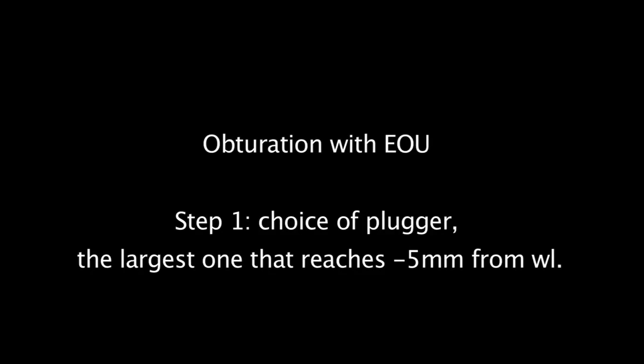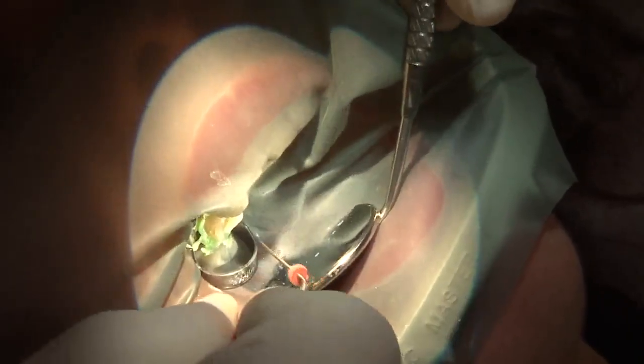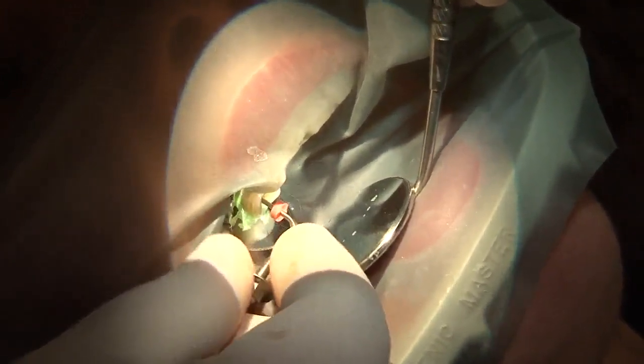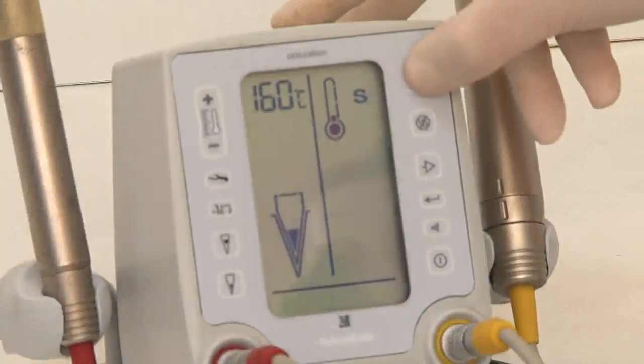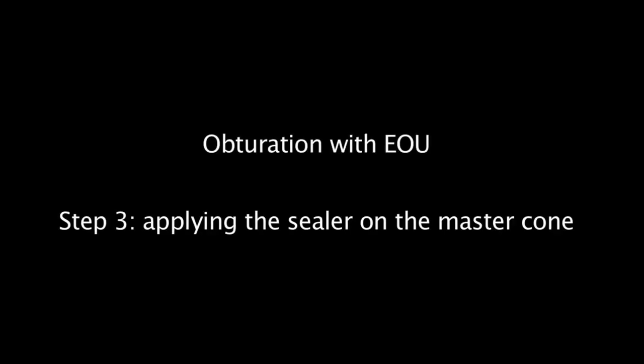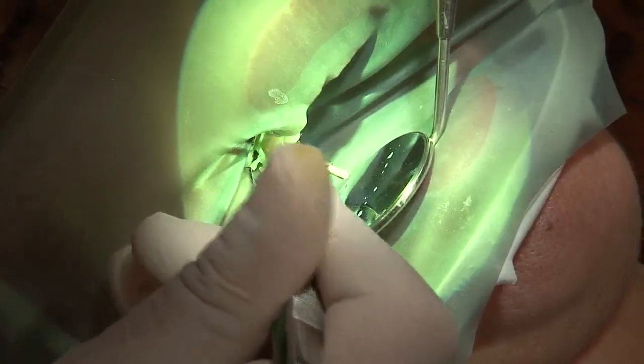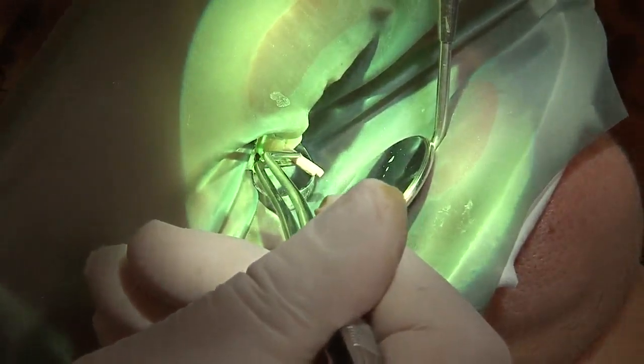It's time to go to the obturation using Element obturation unit. Step one is going to be the choice of our pluggers. It's going to be the largest plugger that will reach minus 5 millimeters from our working length. We tried them first. Again my point of reference was the palatal cusp. So we need to choose the largest one that will go there. Adjusting the unit. First we switch to S which is going to be synthetic for RealSeal, and the temperature is 160 for the down pack. We put a bit of sealer on the master cone. I switch on the filter light on my microscope in order to avoid any chemical reaction or light curing of the sealer. Both master cones are inserted.